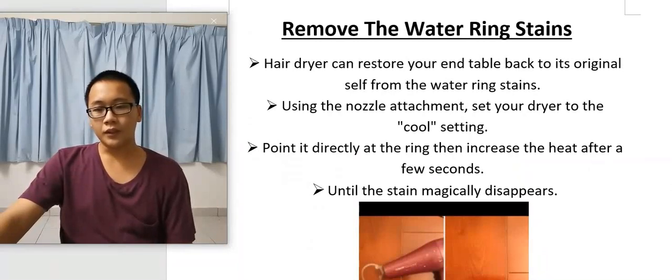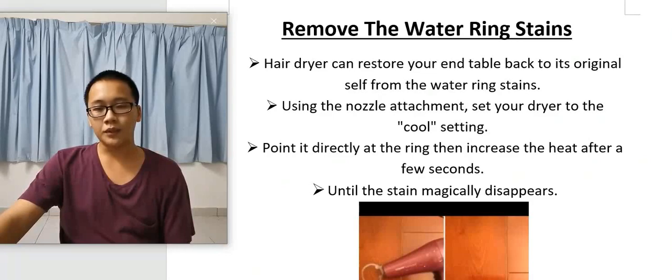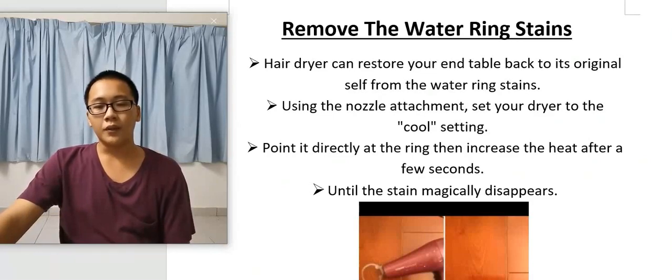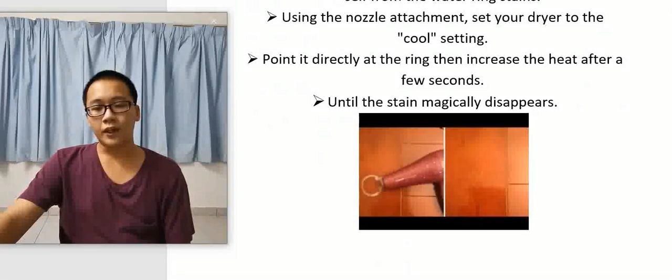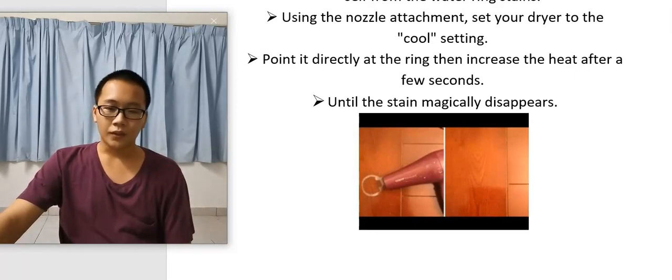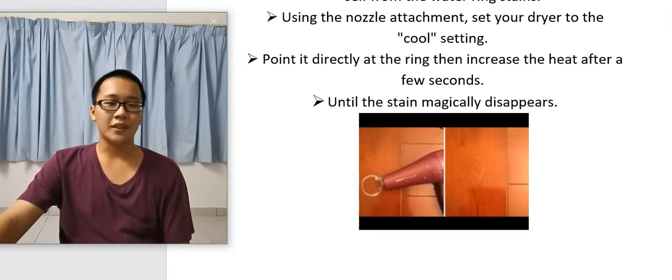Last is remove the water ring stain. Water ring stains are unsightly and seem impossible to remove. However, your hair dryer can actually restore your wood table back to its original state. Using the nozzle attachment, set your hair dryer on the cool setting while aiming at the ring, then increase the heat after a few seconds. Continue blowing warm air until the stain magically disappears.